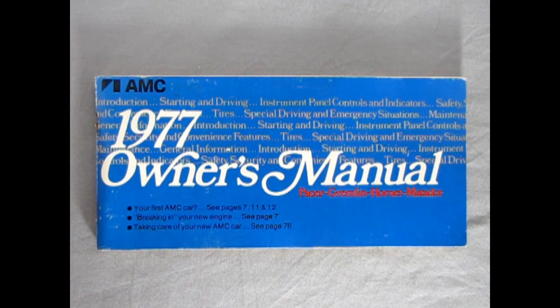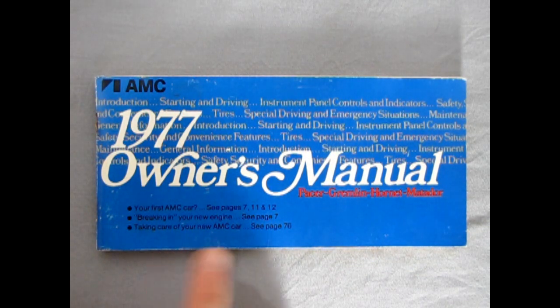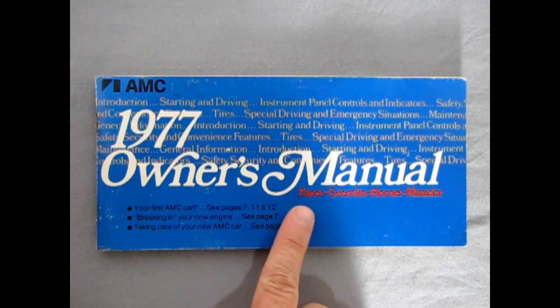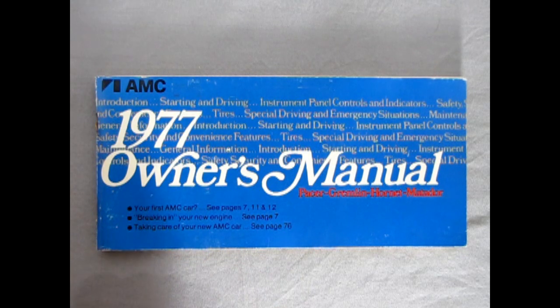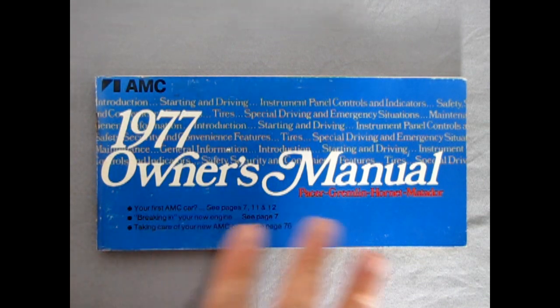So before we begin to take a look at the plastic pieces I just wanted to share this with you. I have a 77 AMC Gremlin and this is the original owner's manual out of that which is good for Pacer, Gremlin, Hornet and Matador. So as we check the plastic pieces I'm going to take a look at this and just show you how AMT matches up to what's in the owner's manual.